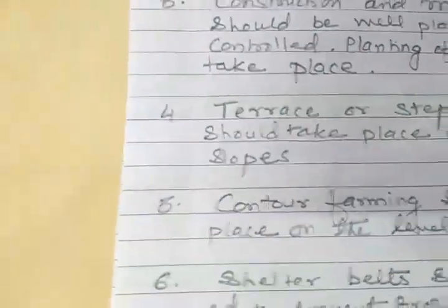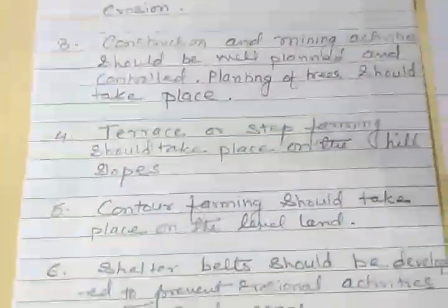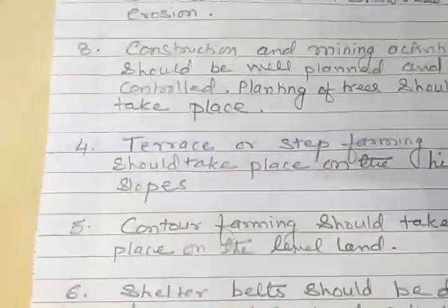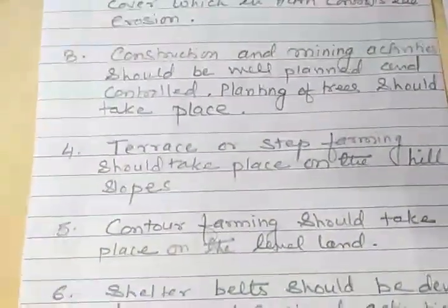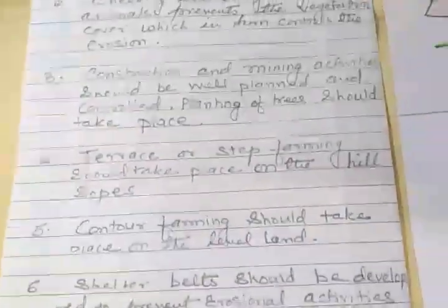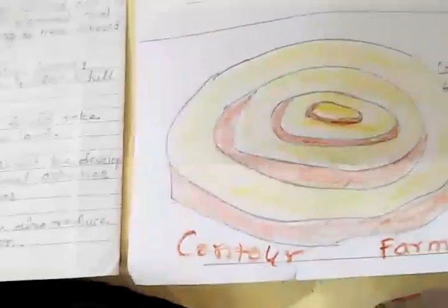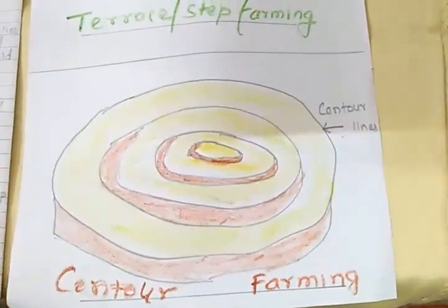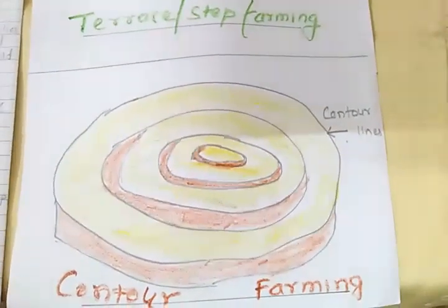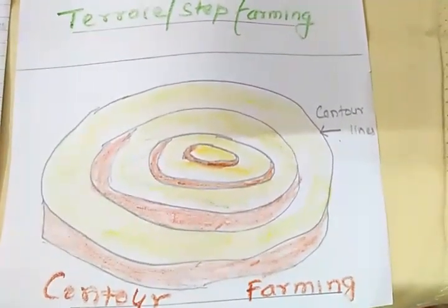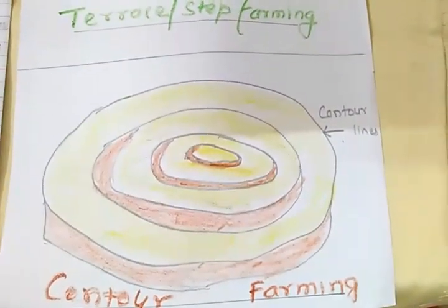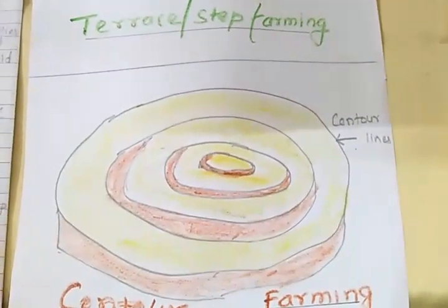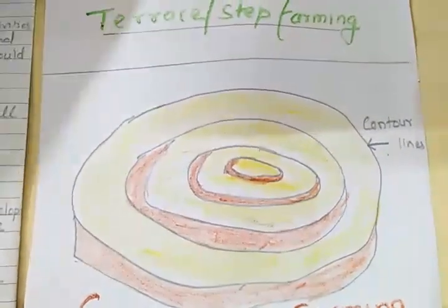Next, we have contour farming. Contour farming should take place on level land by joining areas of equal level or height. Its diagram is given on the next page. The level land is leveled at certain heights — these are considered contour heights or contour levels — and farming is done in the form of steps in all directions so that soil erosion is minimized.